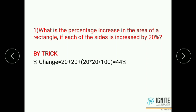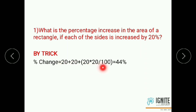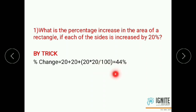Net effect: x increased by 20 and y increased by 20. Therefore, net effect equals x plus y plus xy by 100. Here x and y both equal 20. Therefore: 20 plus 20 plus 20 into 20 by 100 equals 44%. The answer is 44%.